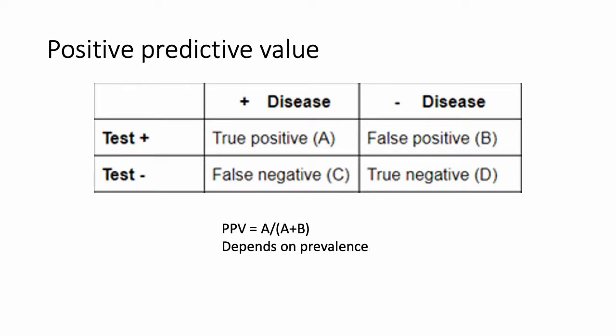The positive predictive value and the negative predictive value are dependent on the prevalence of the disease in the population that you're studying. The positive predictive value tells you, out of all the positive results that you get, how many are actually true positives. To calculate this, you divide the number of true positives out of all the positive results — true and false positives — in other words, A over A plus B.